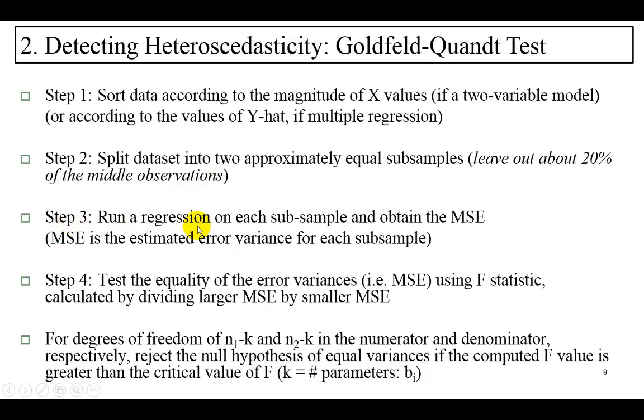And then, in step number three, you run a regression on each of the parts, noting the mean square error, which, as you know, is our estimated error variance for each of the samples. Mean square error is the variance of the residuals whenever you run a regression.